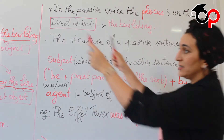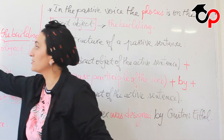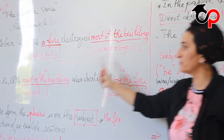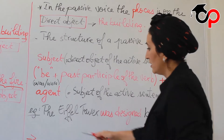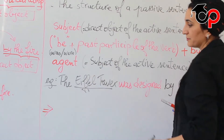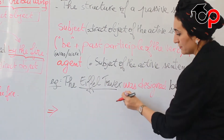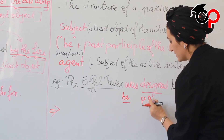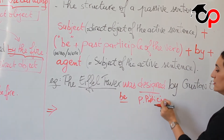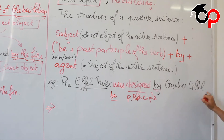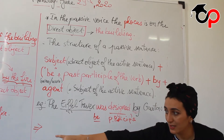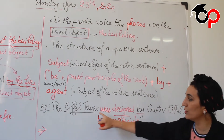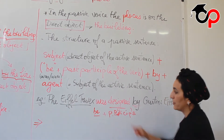Example: here is an active sentence, let's turn it to the passive. 'The Eiffel Tower was designed by Gustav Eiffel.' The Eiffel Tower is the subject. 'Was' is 'to be' in the past. 'Designed' is the past participle. Then 'by Gustav Eiffel,' who was the subject of the active sentence. So, 'to be' means 'was' or 'were' depending on the subject, plus the past participle of the verb.